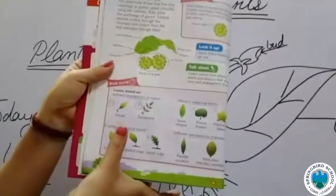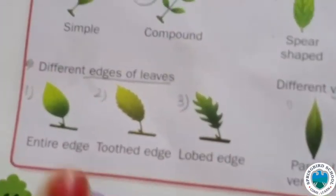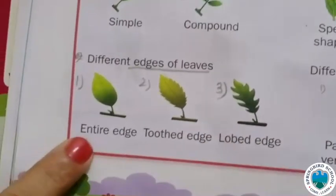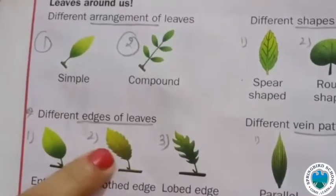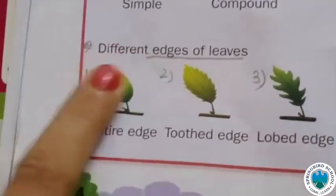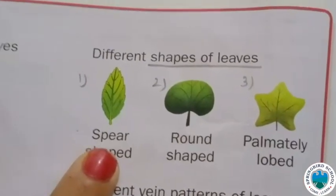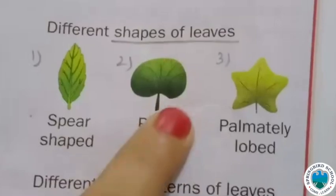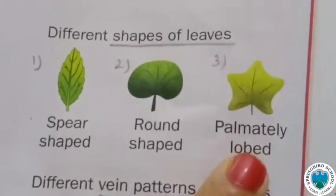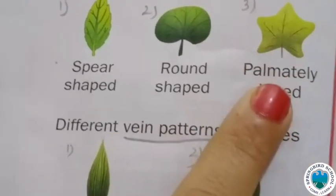Next, come to the different edges of leaves. Leaves are divided into three types based on edges: entire edge, tooth edge, and lobed edge. The entire edge is smooth, the tooth edge has tooth-like formations, and the lobed edge has many lobes. Then come to the different shapes of leaves: spear shape, round shape, and palmately lobed shape.